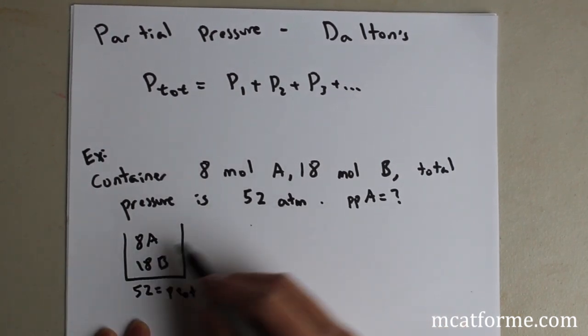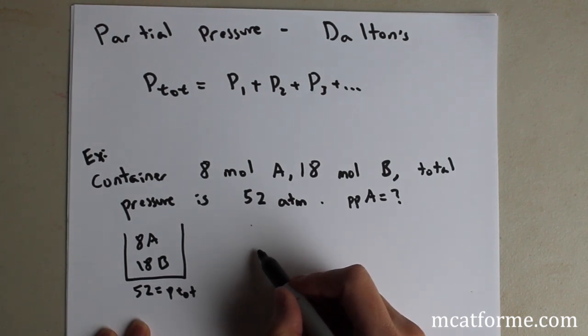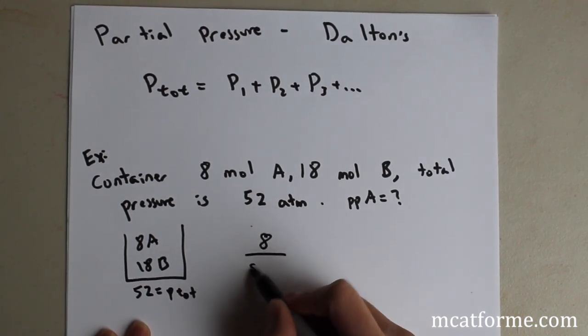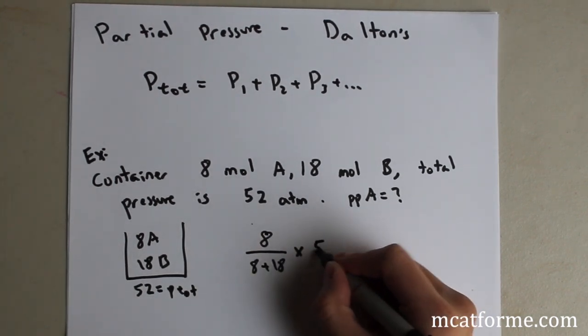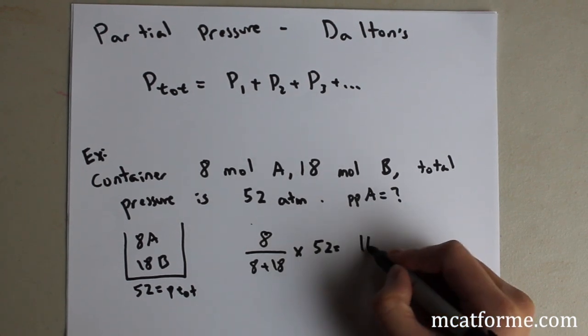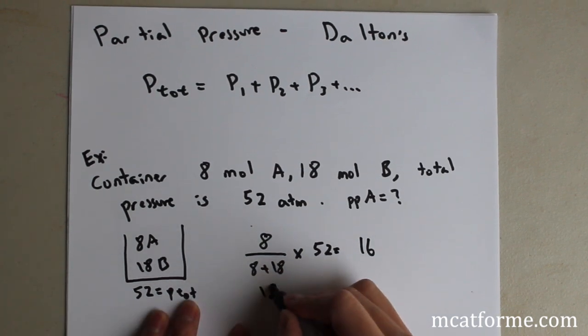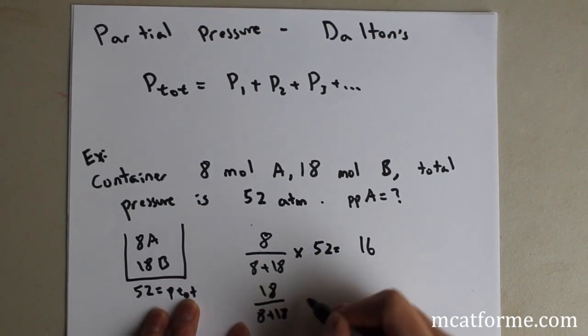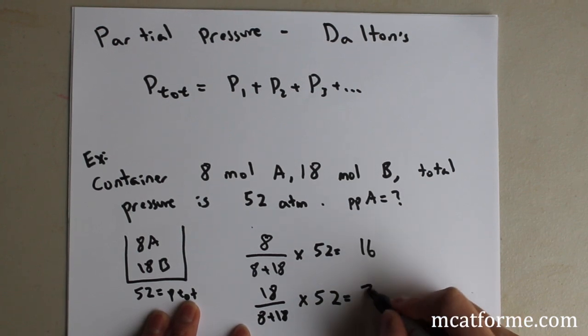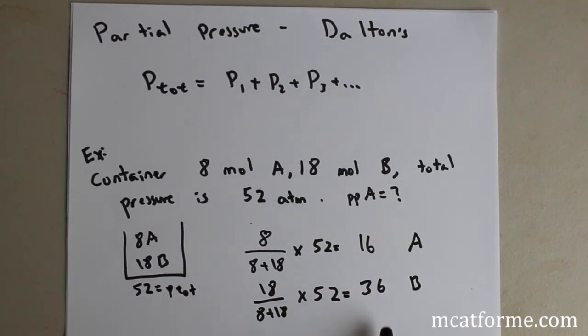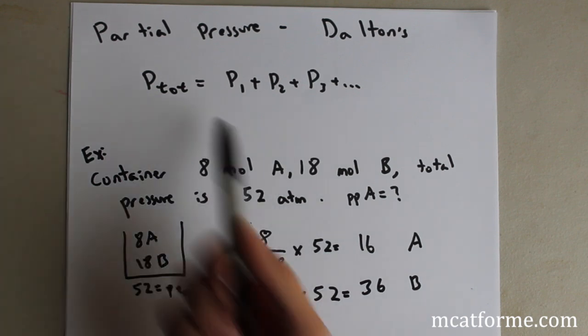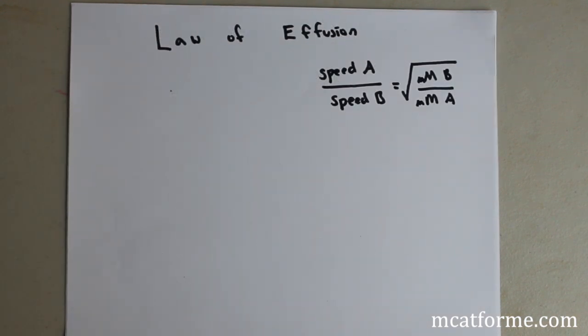So we know that if we want to find the partial pressure of A, what's that going to mean? It's going to mean it's just the proportion of A, so that is 8 over the total amount, which is 26. And we're going to multiply that by 52. And that will show us that the partial pressure of A is going to be 16. And likewise, we can do the same thing with the other one. 18 over 8 plus 18 times 52. So that's going to show us that this has a partial pressure of 36. And if you add those together, we'll get 52 ATM, and that's what Dalton's law says.